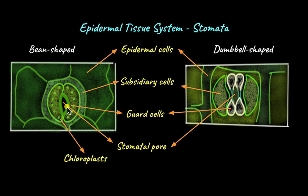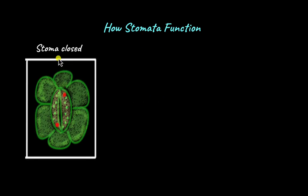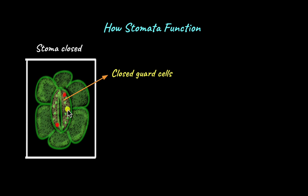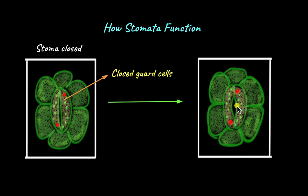The guard cells have uneven thickenings in their cell wall. The inner cell wall of guard cells close to the stomatal pore is thicker compared to the outer cell wall away from the stomatal pore. This is important for them to open and close the stomatal pore. When the plant decides it wants to perform photosynthesis and take in carbon dioxide, the guard cells begin to swell up. Water and ions from the subsidiary cells flow into the guard cells, causing them to swell up. The inner part of the guard cell pinches up, exposing the stomatal pore.